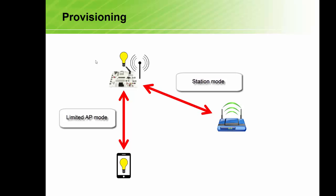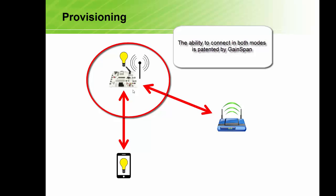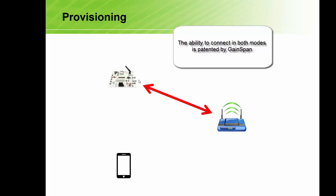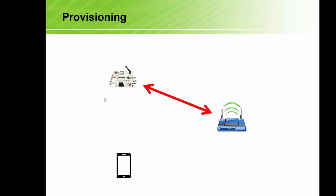So this is the cool part about the whole provisioning feature. We actually have the Gainspan module host a limited AP network, and at the same time connect as a station to the existing network. So once this connection has been established, we can basically then remove the limited AP network and have the smartphone connect to the existing home network. This is actually a patented application by the company. Once we are sure that the connection has been established, we remove the limited AP network and then tell the smartphone to connect to the home network, so we are once again able to talk to the sensors on the board.